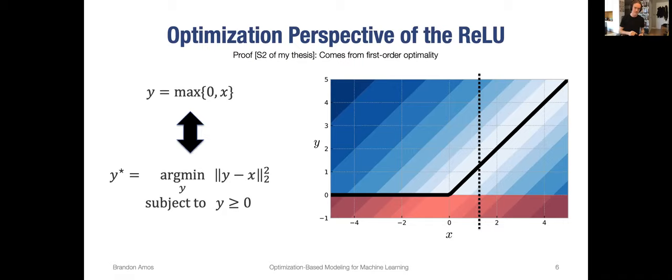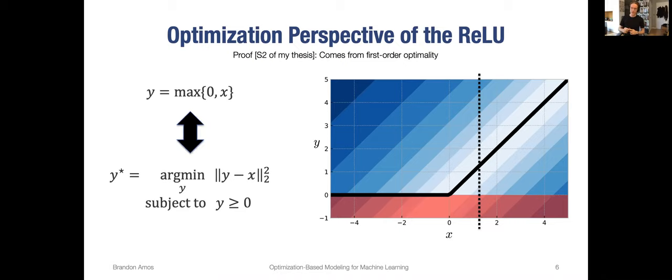I'm going to present ways of interpreting standard operations as optimization-based modeling components. I'm not claiming we should ever do this practically, because it can be rather intractable to solve an optimization problem instead of the normal closed-form operation. But I think it's an interesting perspective because it enables us to start thinking about how we can model with optimization and extend this to settings that aren't as simple. Here's the ReLU — I claim you can represent it with an optimization problem that is doing a projection onto the non-negative orthant.